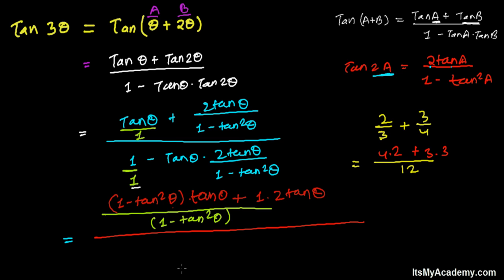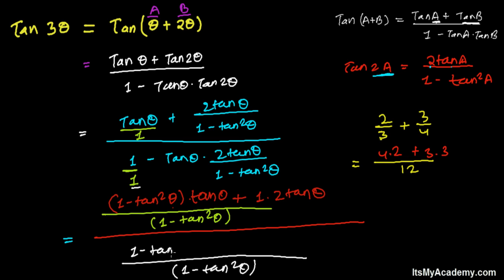We do the same process in the denominator. The LCM of 1 and 1 minus tan squared(theta) is again 1 minus tan squared(theta). When 1 divides it, we get 1 minus tan squared(theta) times 1; and when 1 minus tan squared(theta) divides itself, we get 1 times 2 tan(theta), giving us 2 tan squared(theta).